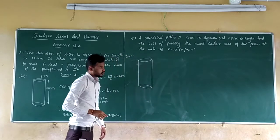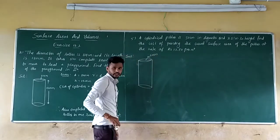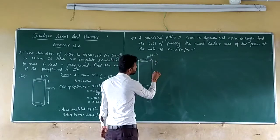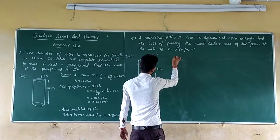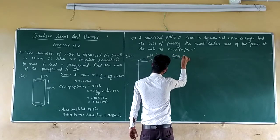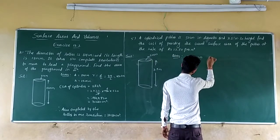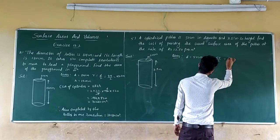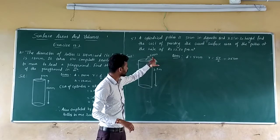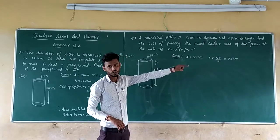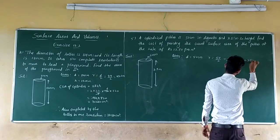Given: diameter is 50 cm and height is 3.5 m. Radius equals 50 divided by 2, which is 25 cm. But make the units the same — height is in meters but diameter is in cm. Convert cm to m by dividing by 100. So radius equals 0.25 m.